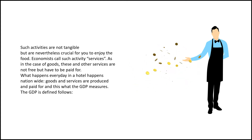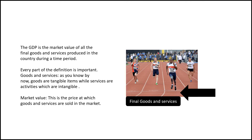Now let's see the GDP definition. GDP is the market value of all the final goods and services produced in the country during a time period. Market value means the price at which the goods and services are sold in the market. GDP is calculated for one time period — usually one year.